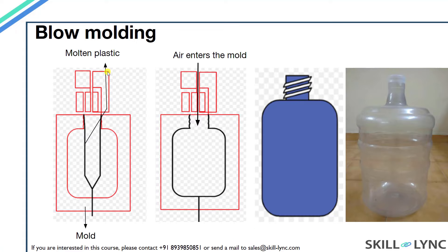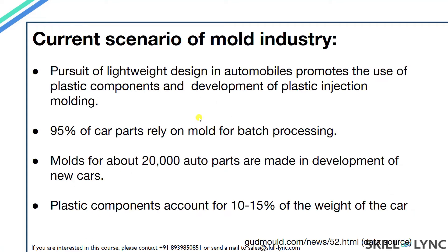For blow molding, a molten tube of plastic is extruded from the machine and placed into the mold. Pressurized gas is blown into the tube and the plastic captures the profile of the mold. Water containers and large drums are some of the parts made using the blow molding process.